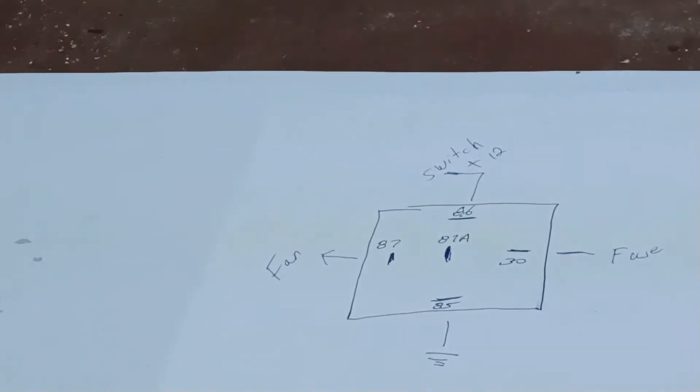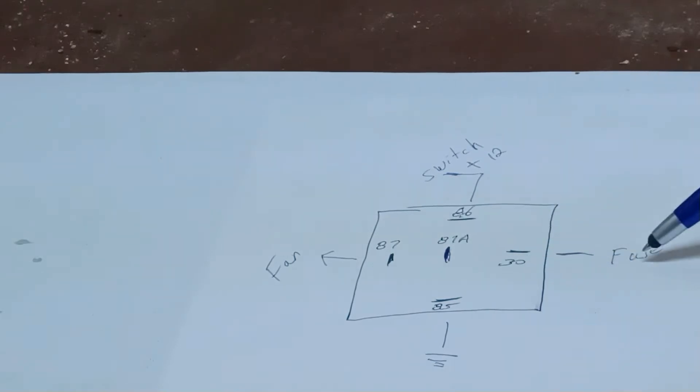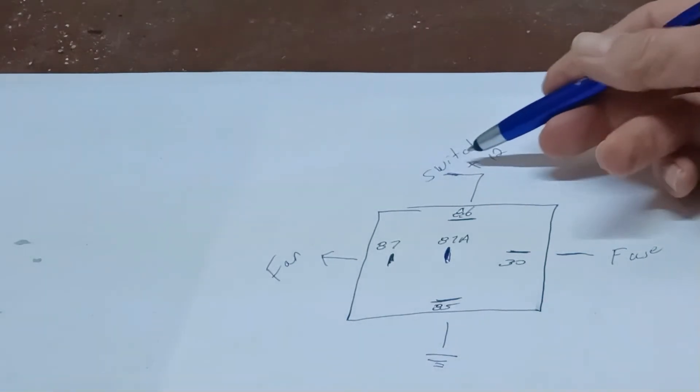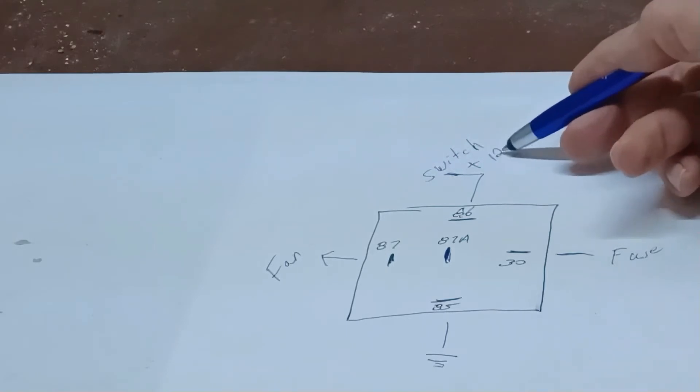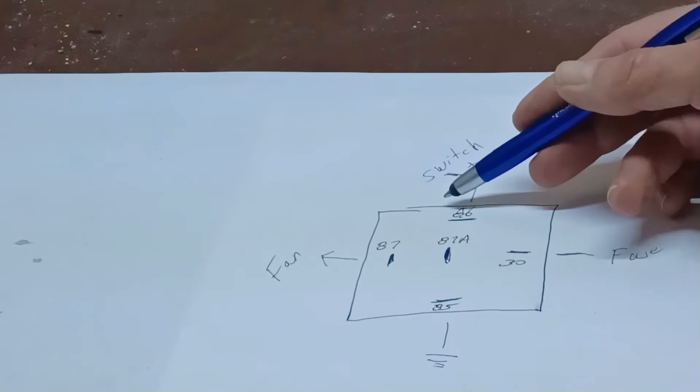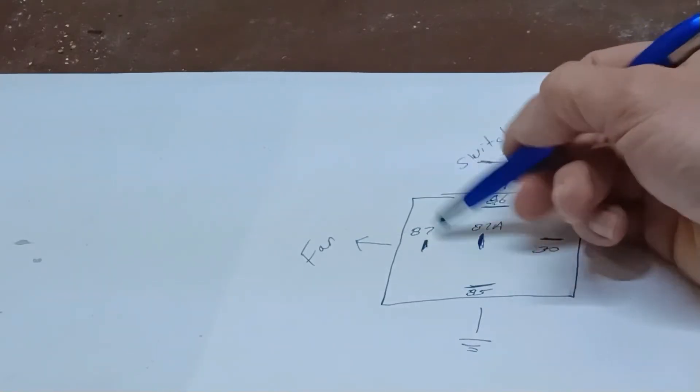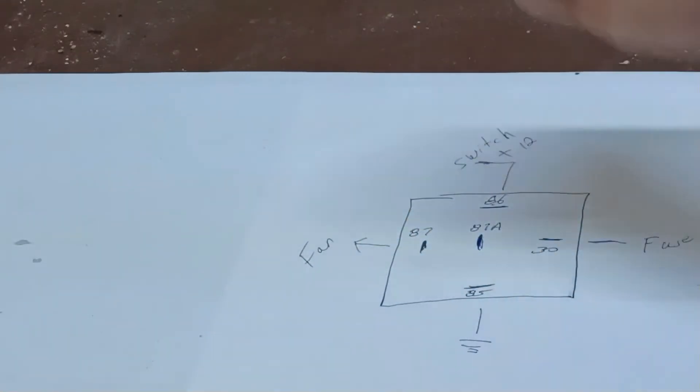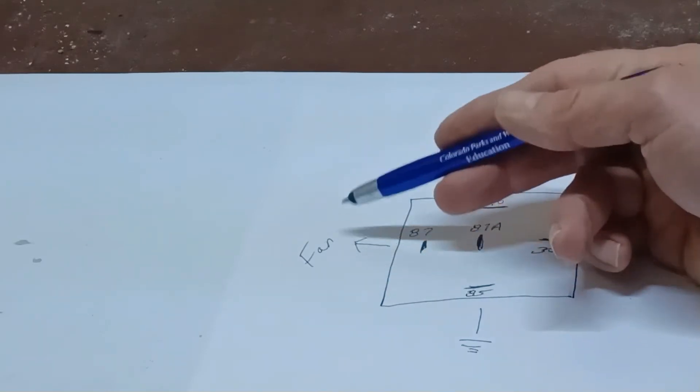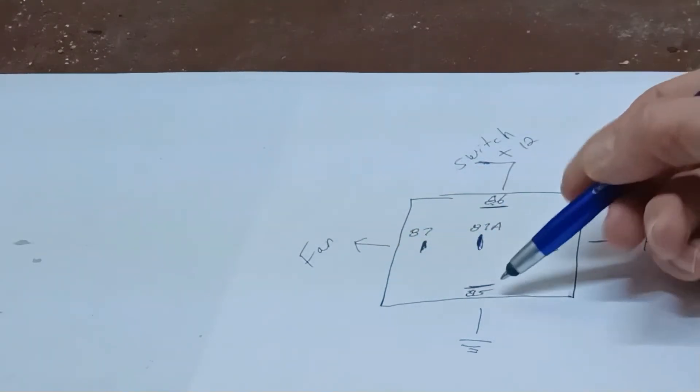Right here what we got is number 30, and it's going to go to our fuse or our circuit breaker. This particular one I'm doing right now I'm going to a 30 amp circuit breaker. Here we're going to have a switch that's going to turn a plus 12 volts on to number 86. Number 87 is going to go out to our fan or whatever you're going to run—lights or whatever it may be. And 85 just goes directly to a ground.